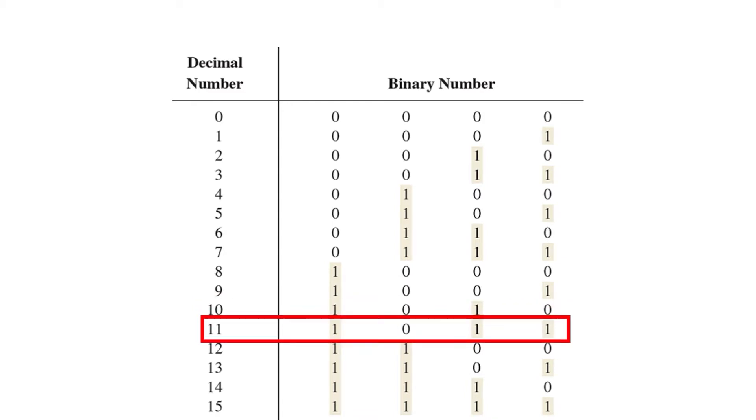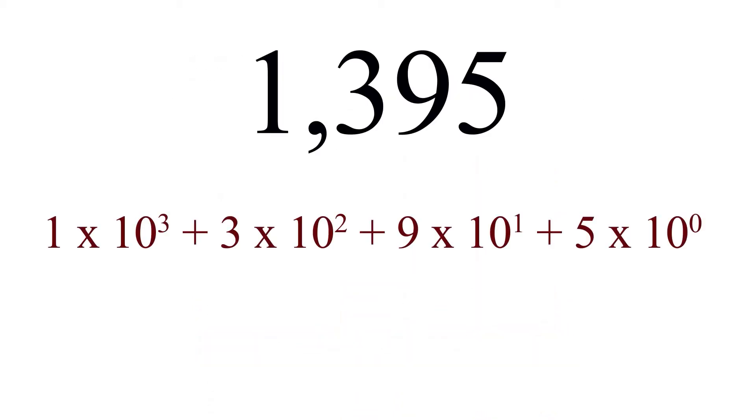5 is 101, 6 is 110, and 7 is 111. This continues on and on, just like decimal numbers.